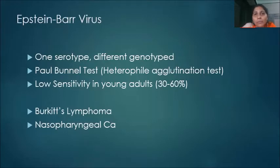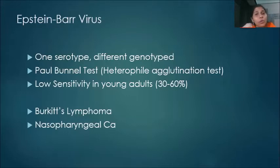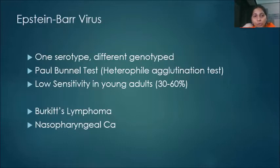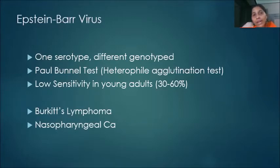We don't go ahead with Paul Bunnell test anymore. Also, in the young adult population where infectious mononucleosis is common, Paul Bunnell test has a very low sensitivity of around just 30 to 60%, so it is of no further use. Apart from infectious mononucleosis, Epstein-Barr virus causes Burkitt's lymphoma and nasopharyngeal carcinoma, particularly in patients of Chinese origin.